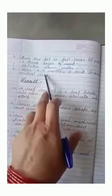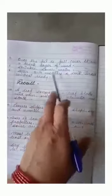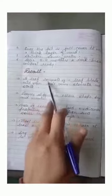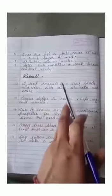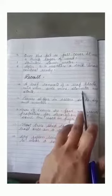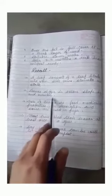After three or four months, a dark brown compost is ready for use. Now let us have a quick revision of what we have learned today. A leaf consists of leaf blade, mid vein, side veins, stomata and stalk. Leaves differ in color, shape, size and numbers.